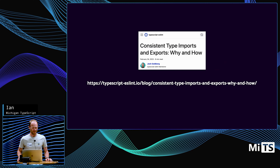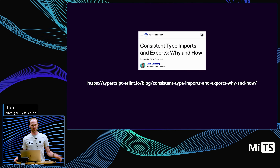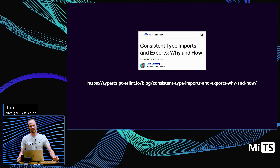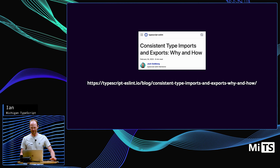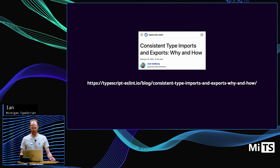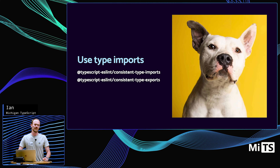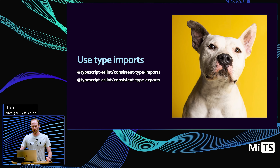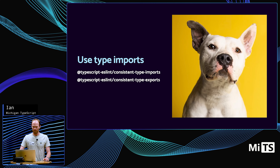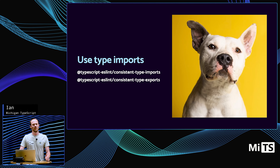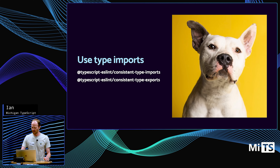Josh Goldberg has a great blog post on the TypeScript ESLint blog covering all of this. As a summary, there are two rules: consistent-type-imports and consistent-type-exports. These ensure that if you're importing a type, you use the type keyword. One nice thing is they're also auto-fixable, so you can turn on the rule, run it, let it fix everything, and you'll be in good shape.